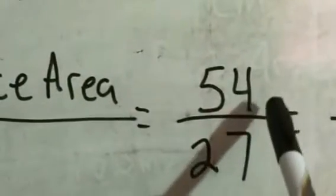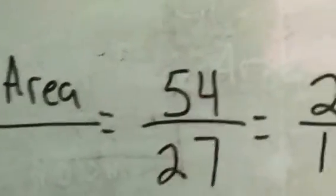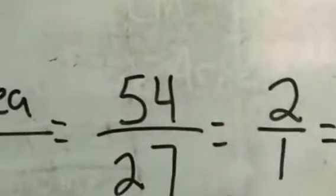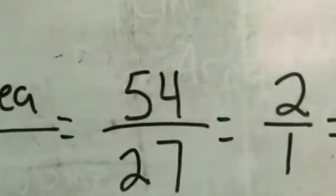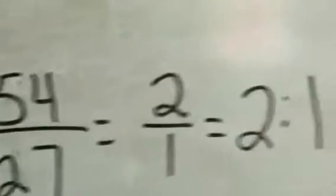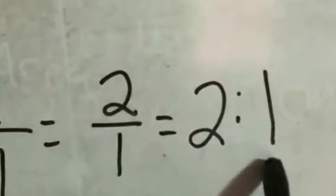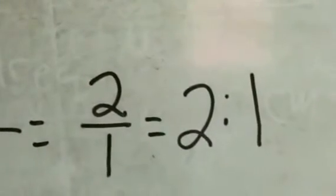So it was 54 centimeters squared for the surface area and then 27 cubic centimeters for the volume. Now, once we do that, it's a simple mathematical operation. Divide 54 by 27, and what you get is 2 over 1, which, you know, I know as a fraction is just 2, but we put it as a 2 to 1 surface area to volume ratio.